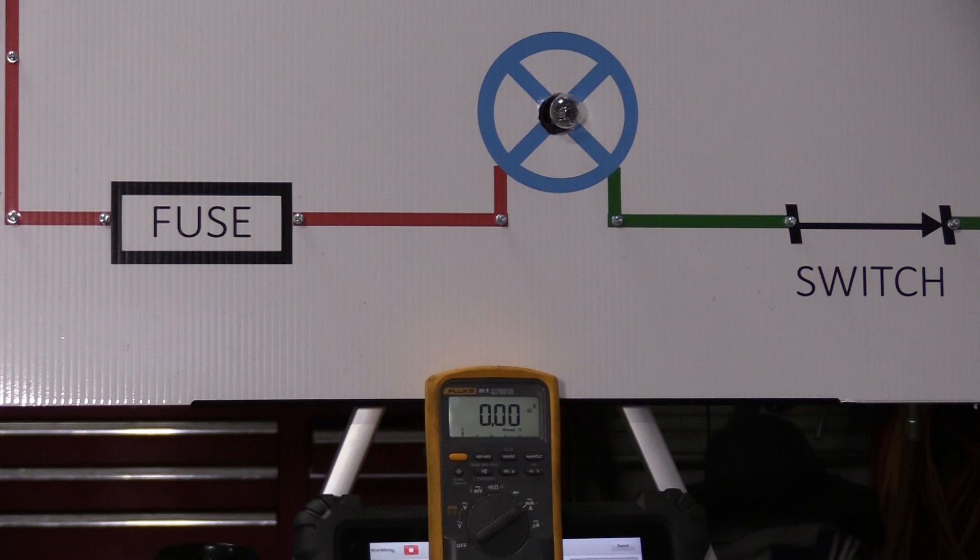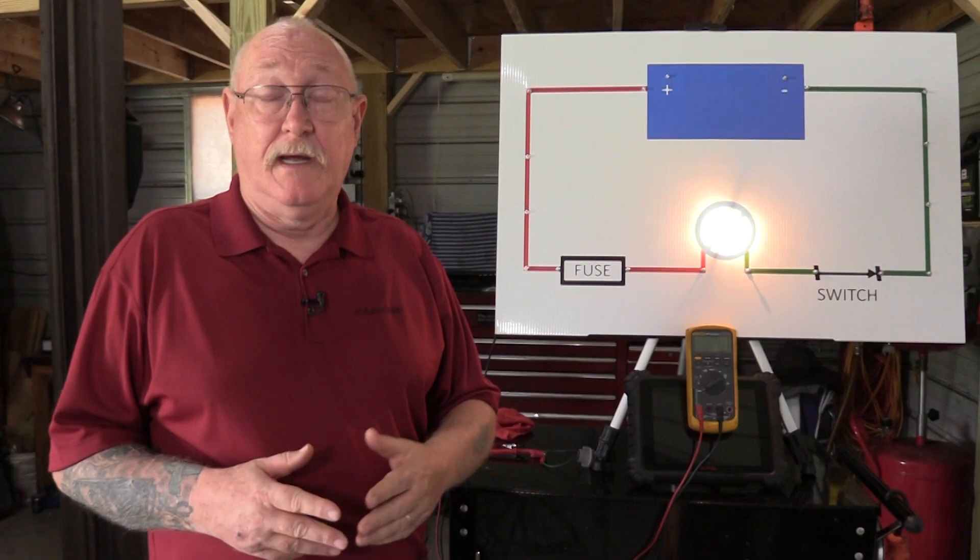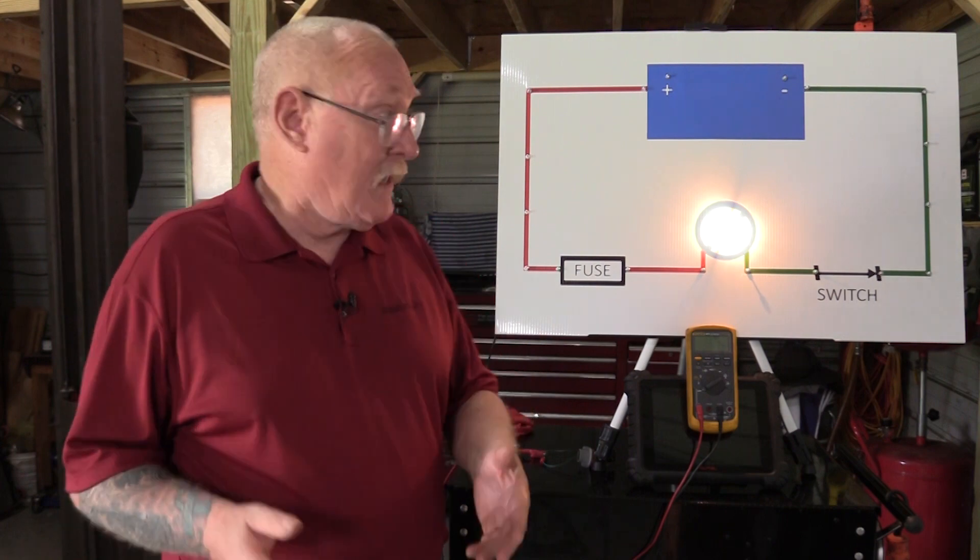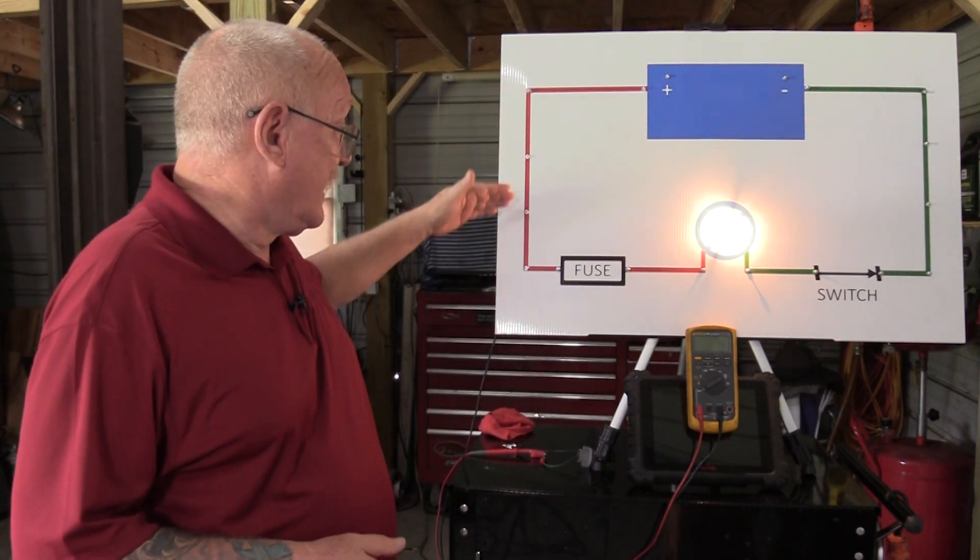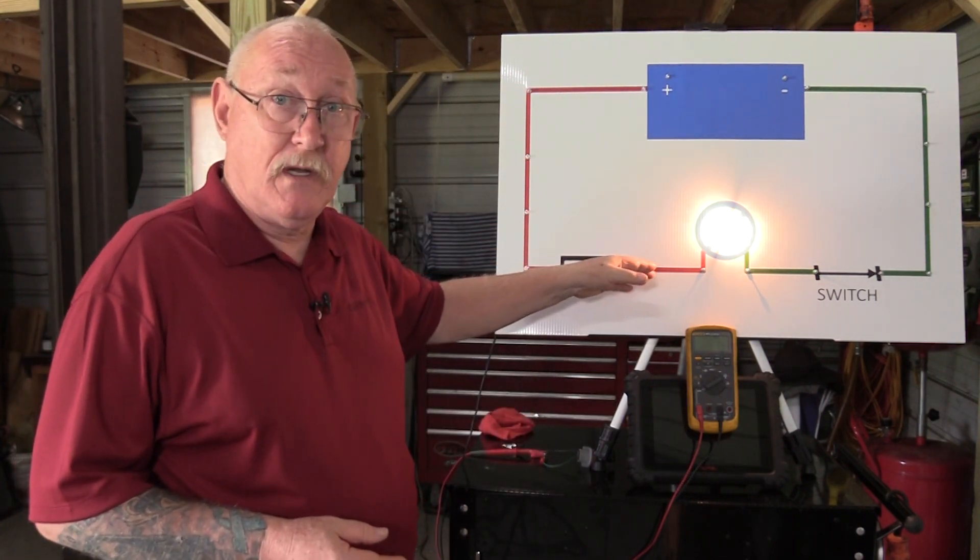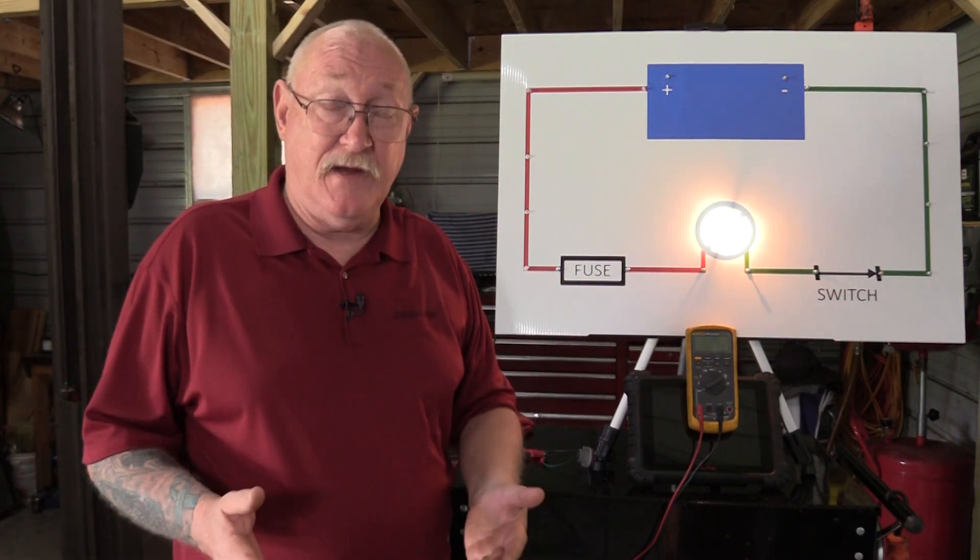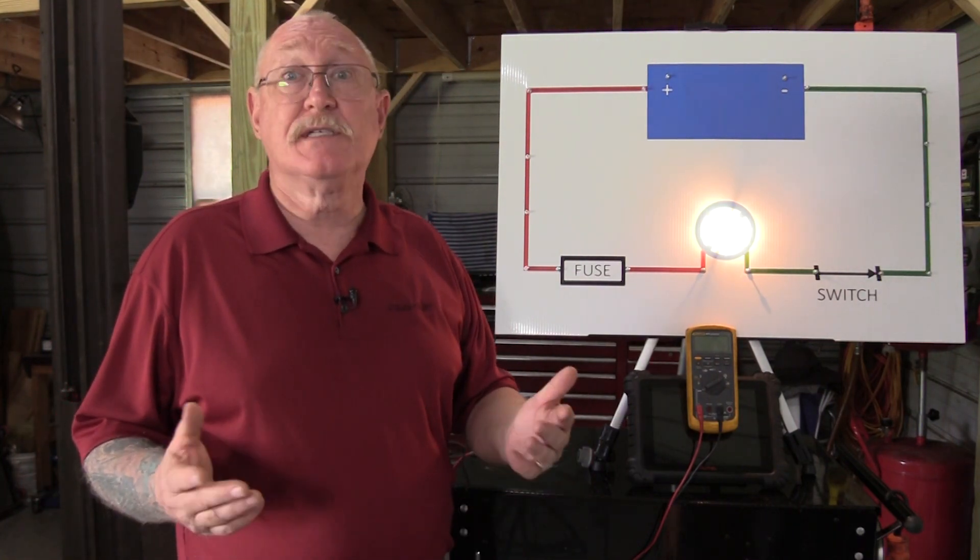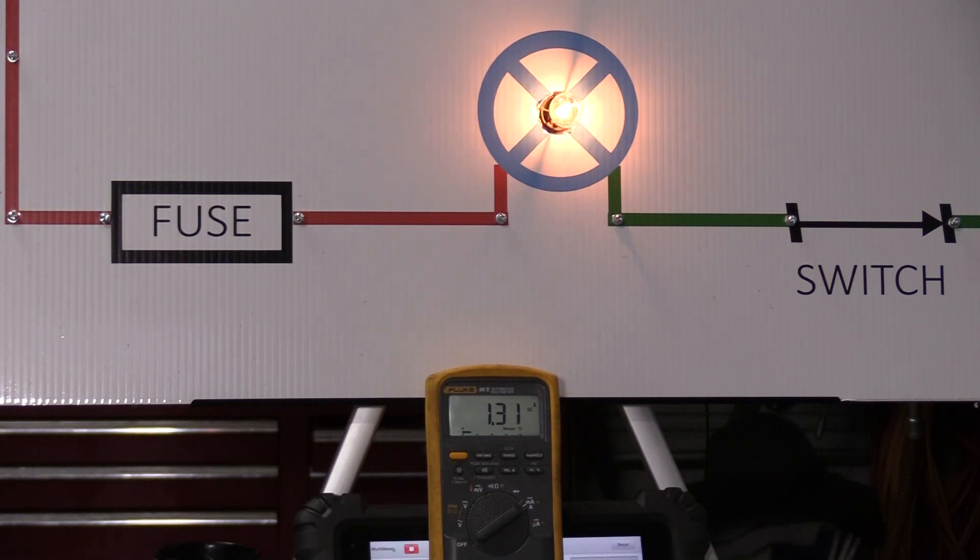For example, if there's an open circuit, resistance becomes infinite and current flow becomes zero. We all know that, right? And if the circuit shorts to ground anywhere on the positive side of the circuit before the load, then resistance is going to drop to next to nothing and current flow is going to skyrocket.